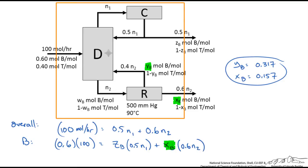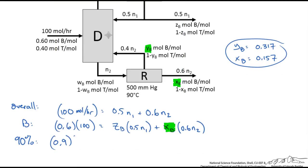But we know XB. So we have two equations and three unknowns. We need one more equation. That last crucial piece of information is that 90% of the incoming benzene comes out in the distillate stream. So 90% of the incoming benzene, 0.6 times 100 moles per hour, is going to equal the benzene leaving in the top stream, ZB times 0.5N1.